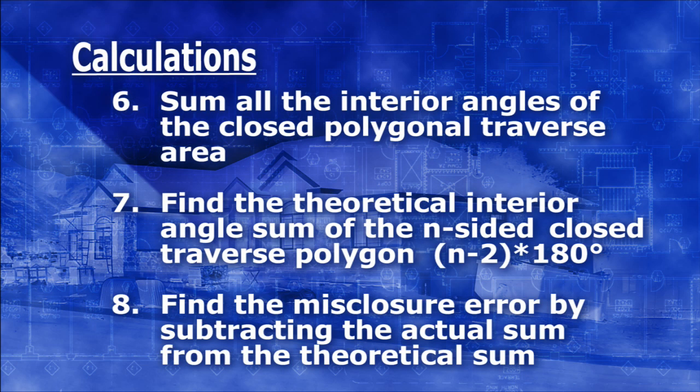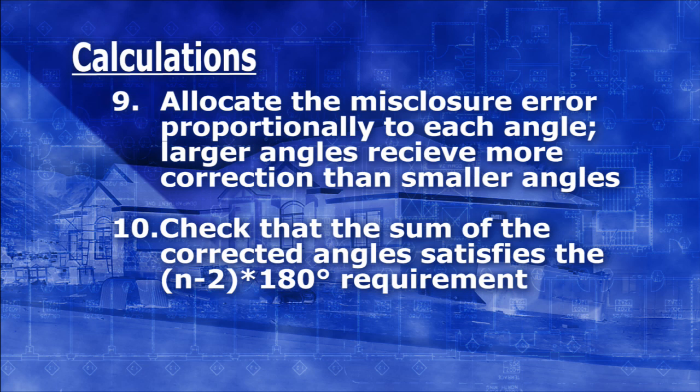Step six is to find the sum of all the angles of your closed polygonal traverse, followed by step seven: finding what the theoretical value should be using the geometric formula (n minus 2) times 180. Step eight: subtract the difference between steps six and seven to find the misclosure. Step nine: allocate the misclosure found in step eight to each of the n angles on your polygonal traverse proportionately — smaller angles receive less correction than larger angles — and ensure that your adjusted polygonal traverse angles sum to the correct number.